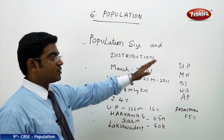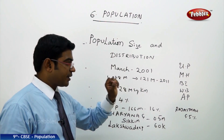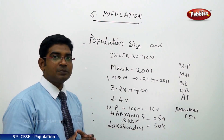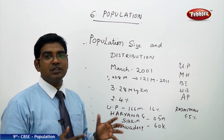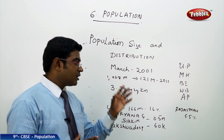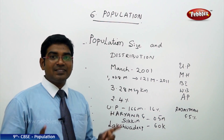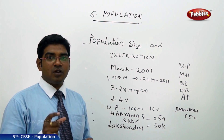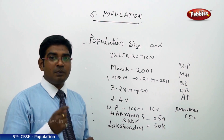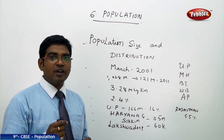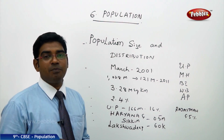Most of India's population lives in only five major states: Uttar Pradesh, Maharashtra, Bihar, West Bengal, and Andhra Pradesh. Together, half of India's population lives in these five states. Rajasthan, though the largest state by area, has only 5.5% of India's total population.